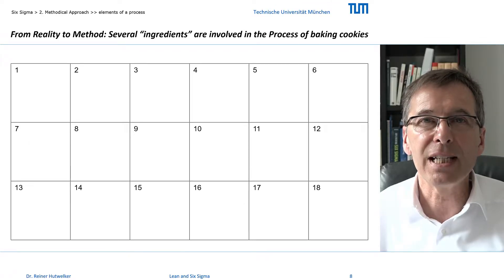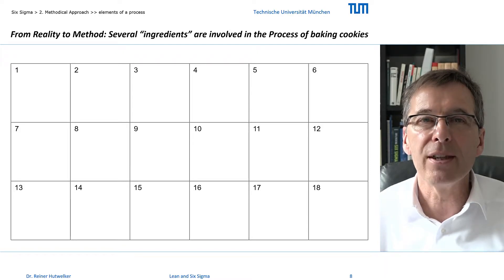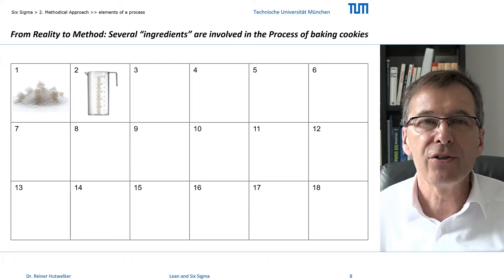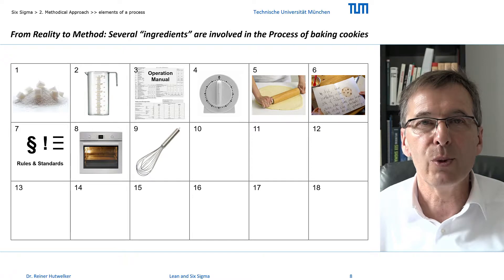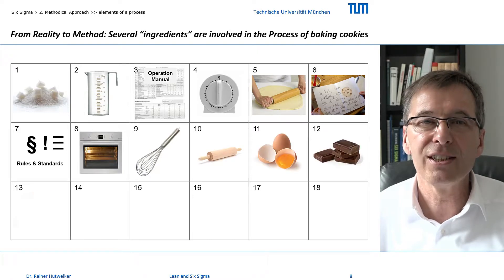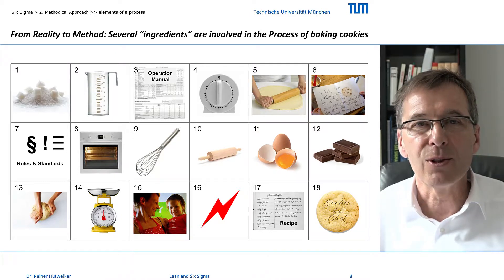Our business case here is about baking cookies, and I'm sure you have at least seen the process of how cookies are baked before. Let's change from the reality section to the method. Baking cookies involves several things: sugar, a measuring jug, operation manuals, a timer, rolling the dough, order rules and standards, an oven, a whisk, a rolling pin, eggs, chocolate, kneading the dough, a kitchen scale, our chef and her manager, energy, a recipe, and the cookie.